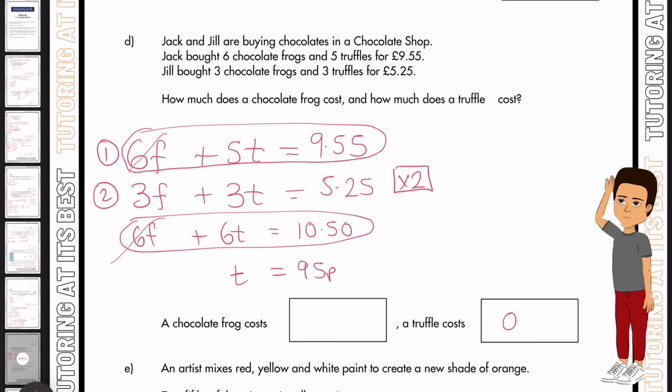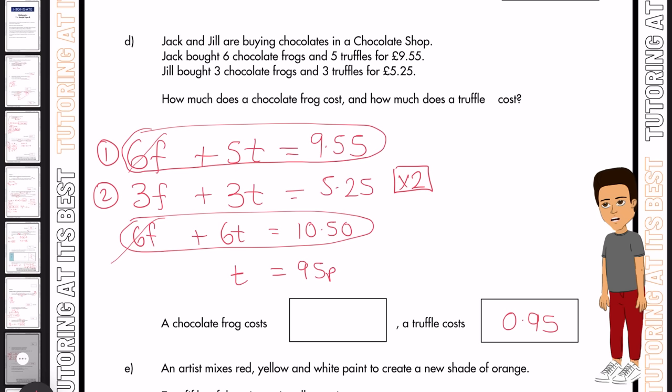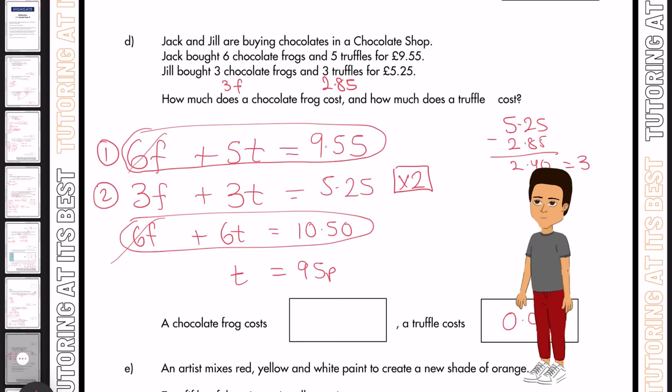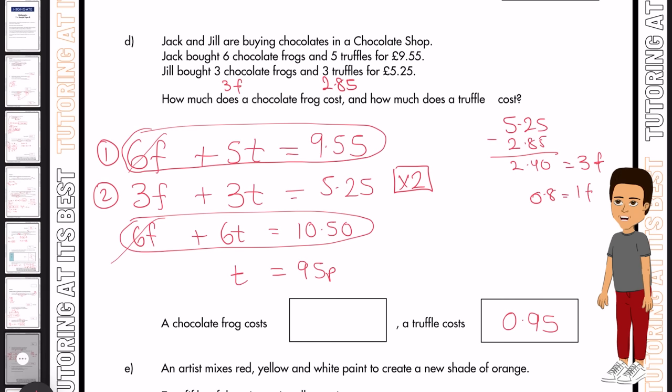So we now know the value of the truffle is 95 pence. And then we can substitute that value into the original equation, whether it's one or two. Let's substitute it in equation two. So we now know that we have three chocolate frogs plus three truffles. So three times 95 pence is £2.85. And now I'm going to get £5.25 and subtract £2.85, and that gives me £2.40. And that equals three chocolate frogs. So if I divide that by three, I have 80 pence as one chocolate frog. And that is my answer.